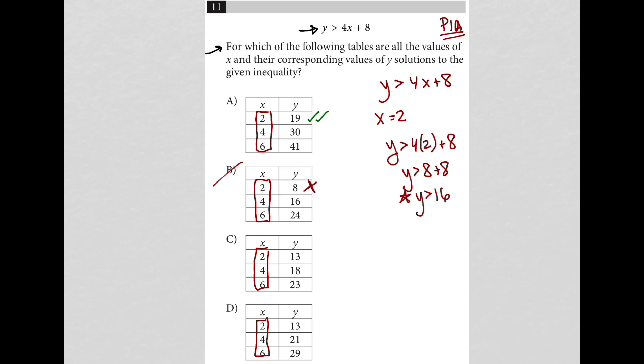Choice C, again, 13. 13 is not greater than 16. So C is gone. And choice D, the same exact thing, right? I have another 13 here. So really just with checking one potential, right, one answer here, one x value, I get straight to my answer. And that answer is choice A.